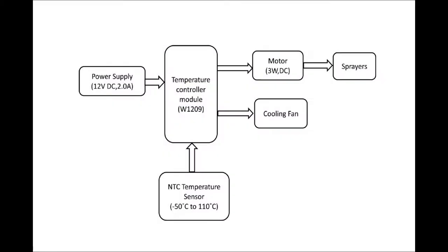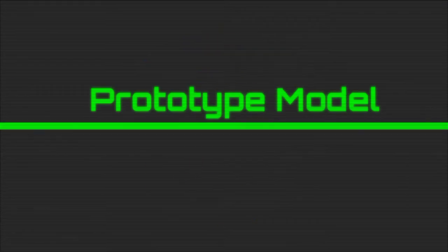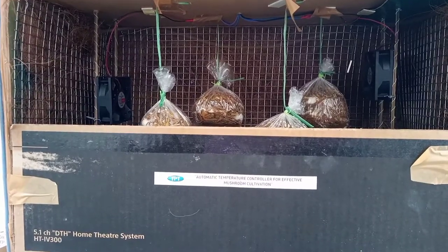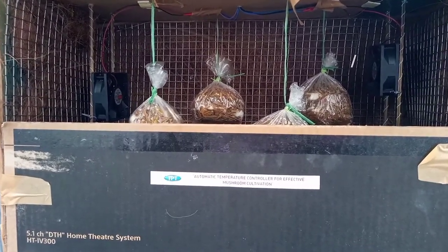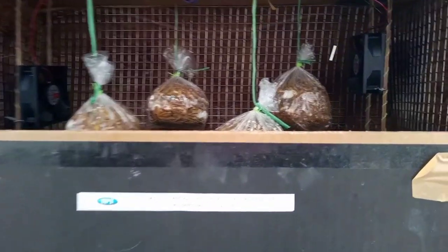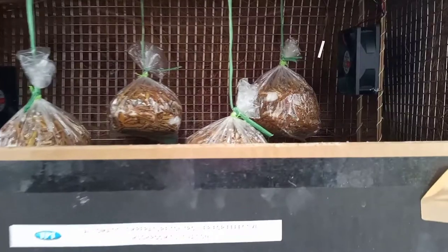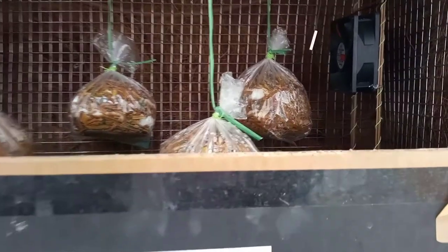We have done a prototype model for increasing mushroom cultivation in small-scale industries. The ambient temperature required is 28 degrees Celsius and room humidity 85%, maintained using a thermostat sensor. This activates the cooling fan and sprayers to control the temperature and humidity within the required level.